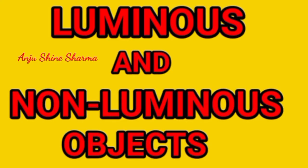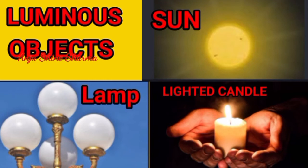Luminous Objects and Non-Luminous Objects. Depending on whether the objects emit their own light or not, they can be placed in two groups: Luminous Objects and Non-Luminous Objects. Luminous Objects are those objects that emit their own light. These objects are visible even in the dark as they give out their own light. All natural and man-made sources of light are Luminous Objects.